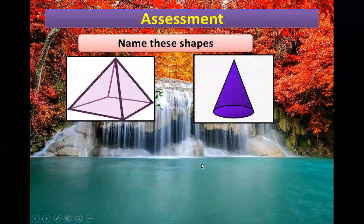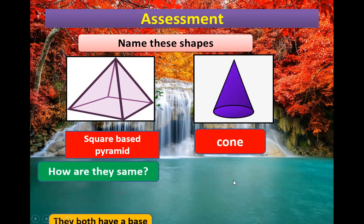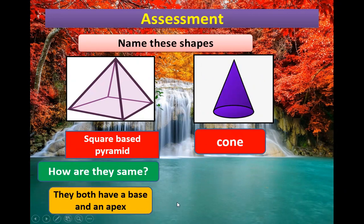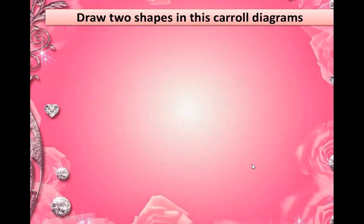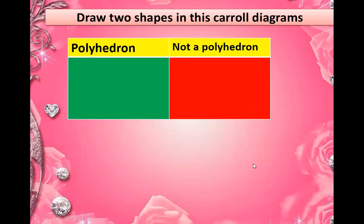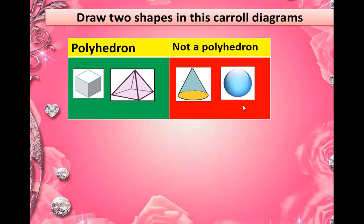Assessment — name these shapes. I want you to write the names on your whiteboard. The first shape is a square-based pyramid and the second one is a cone. How are they the same? They both have a base and an apex. How are they different? One has a curved edge and the other has straight edges. Now draw two shapes in this Carroll diagram — polyhedron, not a polyhedron. Let's check — these are the two polyhedrons and these are not a polyhedron.